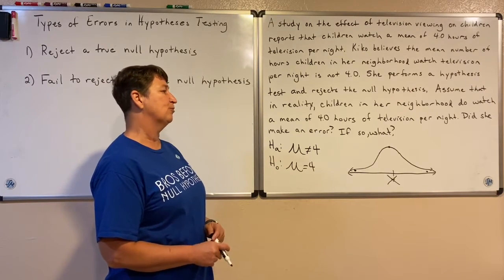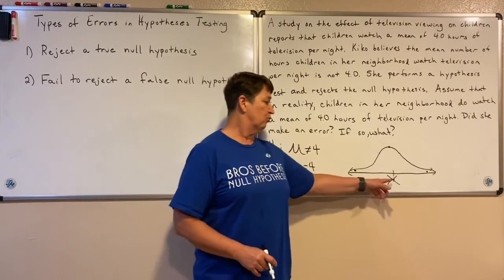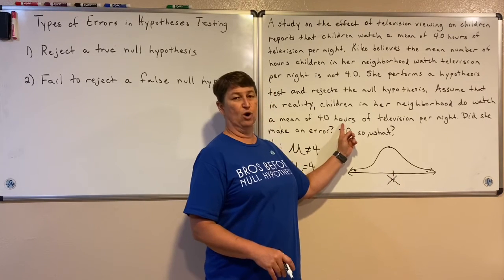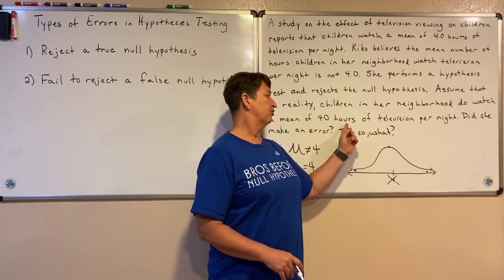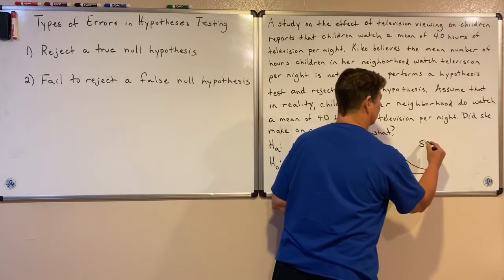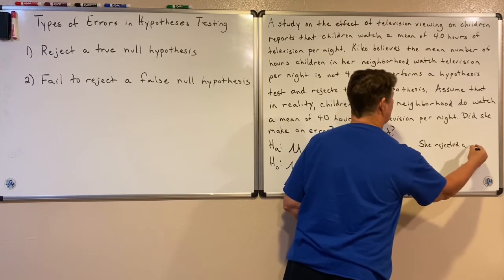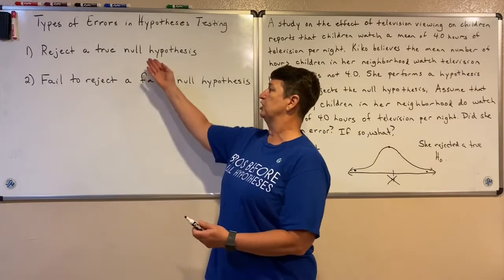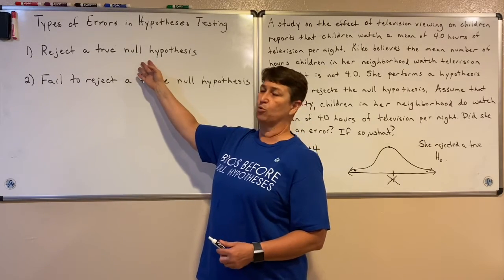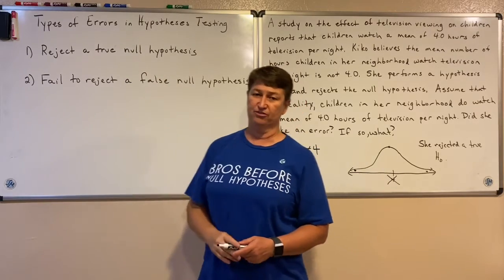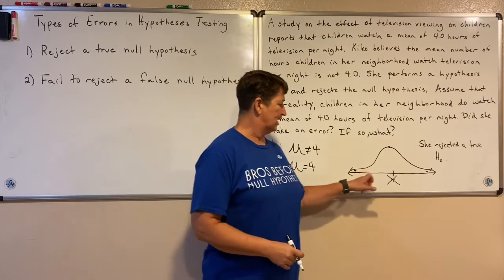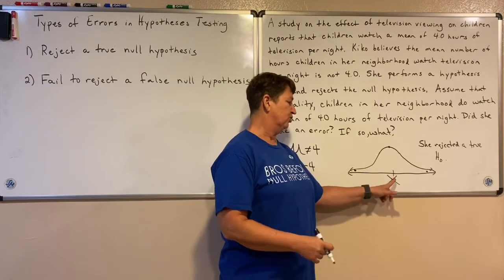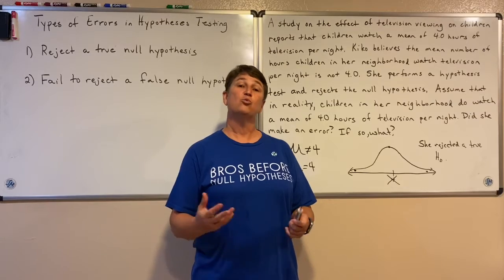Assuming that in reality children in her neighborhood do watch a mean of four hours, she rejected the null and said they don't watch four — but in reality they do watch four. So she did make an error. It turns out she rejected a true null hypothesis, which means she made a Type 1 error. She came up with something really rare, or maybe her sample just wasn't good — something that caused her to reject a true null hypothesis.